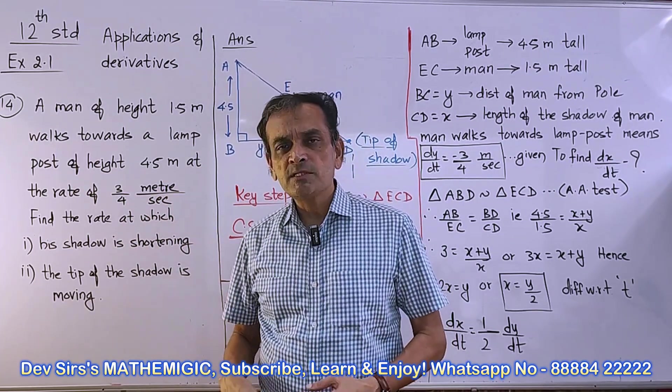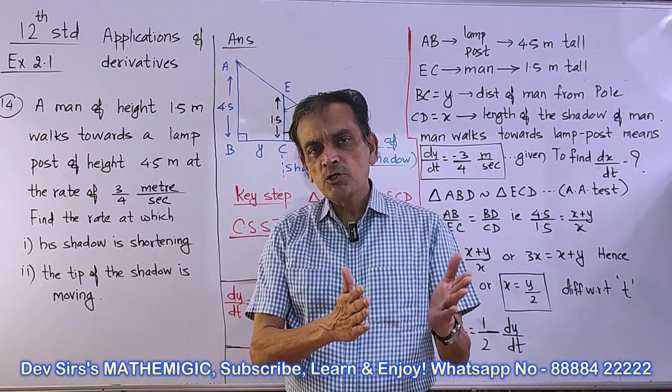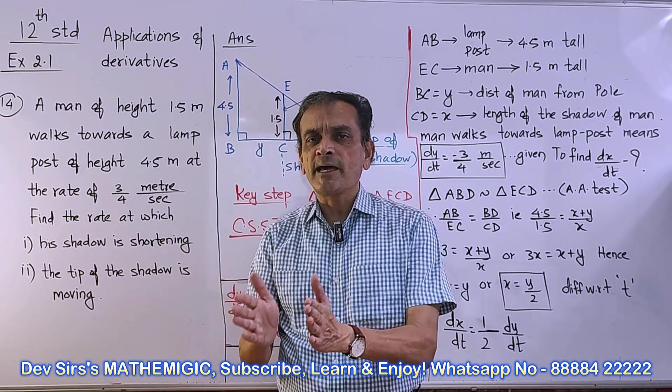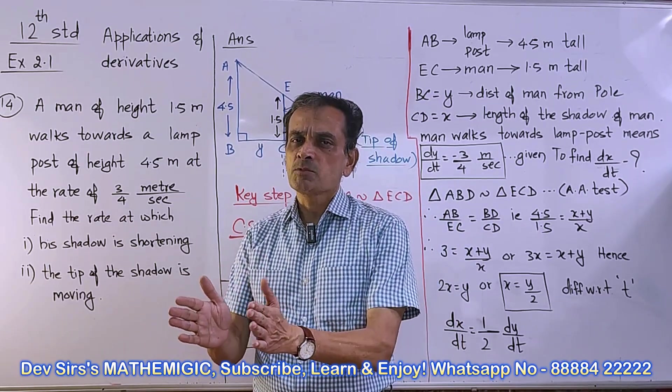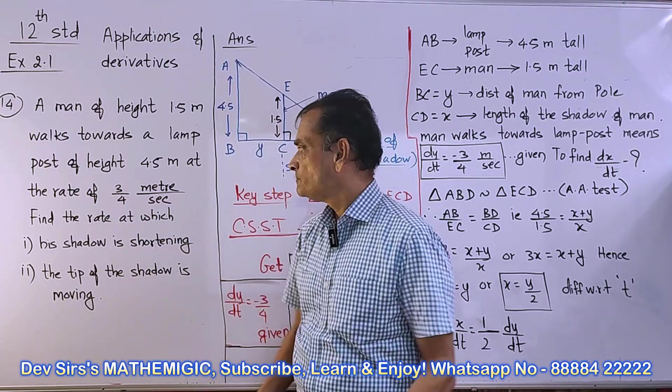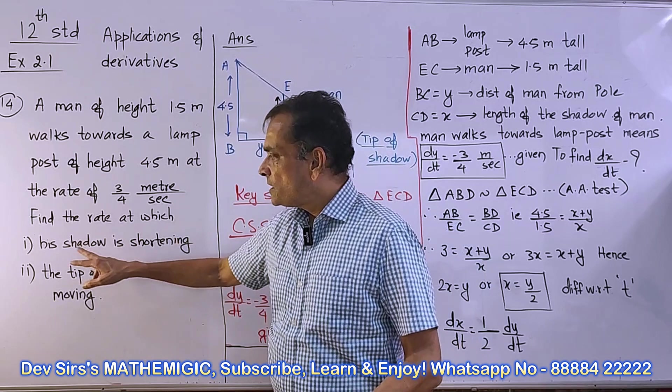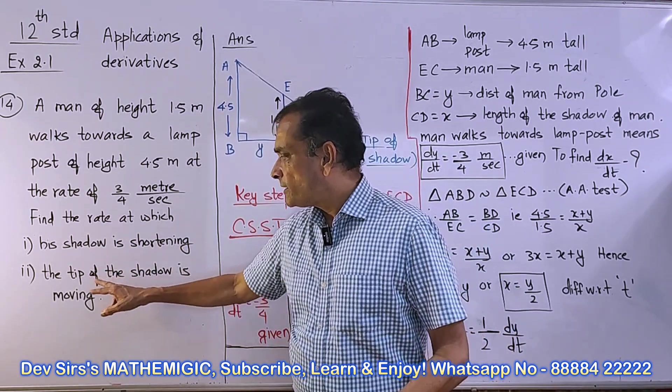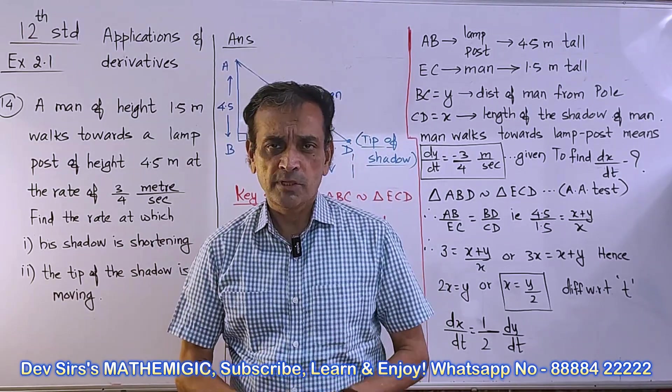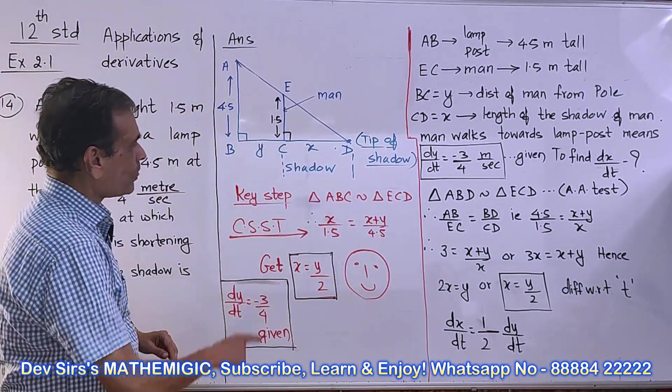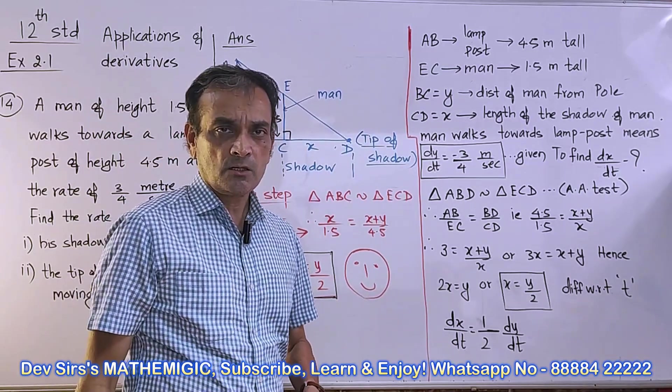A man of height 1.5 meters walks towards a lamppost of height 4.5 meters at the rate of 3/4 meter per second. Meter per second means it's speed. Rate means change of distance with respect to time. It's how fast or speed. Find the rate at which his shadow is shortening and the tip of the shadow is moving.